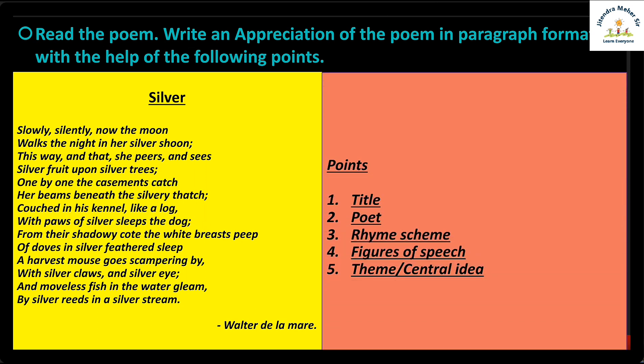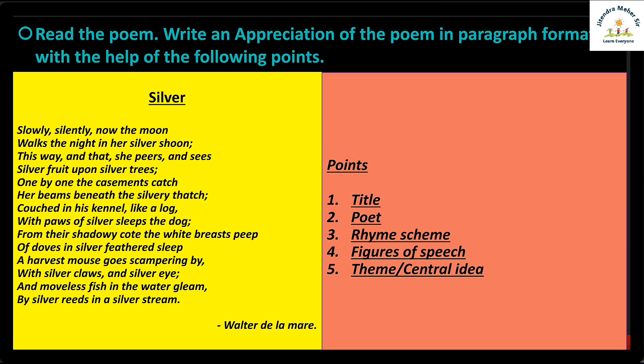There are five points: title and poet for half a mark, rhyme scheme and figures of speech for one mark each, and theme and central idea for two marks. So total five marks are there. Let's see the appreciation of this poem.